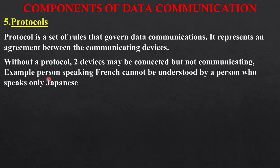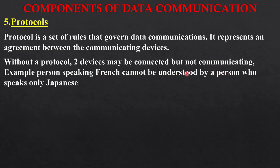For example in real life, a person speaking French cannot be understood by a person who speaks only Japanese. The rule is that whoever is sending the message in French, the receiver also should understand French — otherwise they won't be able to communicate. So protocol makes sure the sender and receiver can communicate properly without any issue. These are the five components of data communication. Thank you.